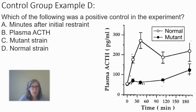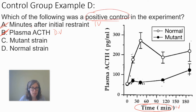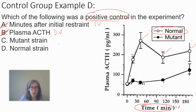The question might read something like: which of the following was a positive control in the experiment? Option A — minutes after initial restraint — no, that's the independent variable, you can see it on the graph, so we cross that out. Plasma ACTH is the dependent variable, so that's not a positive control either. Now I'm looking at the mutant strain or the normal strain. A positive control is something where I do expect to see results — I'm not pulling something out; I'm expecting some kind of positive result. So I'm going with the normal mice, because they show a normal response. The mutant strain is pulling something out of the system — it's taking away their ability to make CRH. I'm going to go with the normal strain as the positive control.